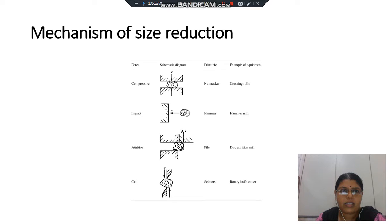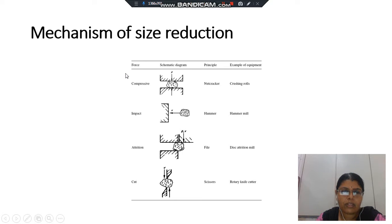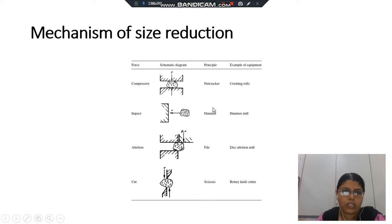There are basically 4 mechanisms of size reduction: compression, impact, attrition, and cutting. For compression, a simple example is a nut cracker — that is how we apply compression. For impact, a simple example is hammering. We apply positive pressure on the material with a hammer and it converts into a smaller size.